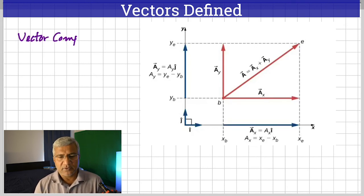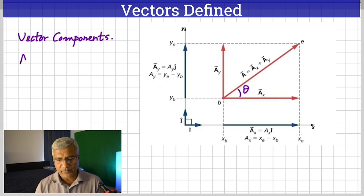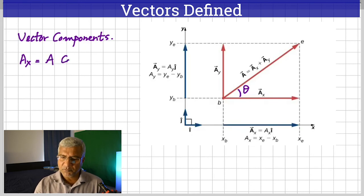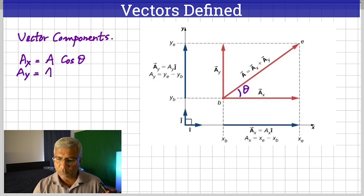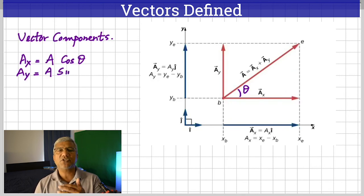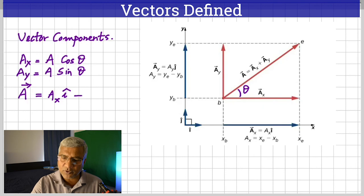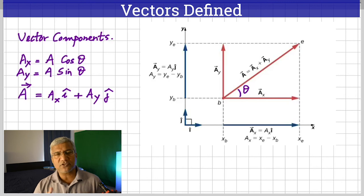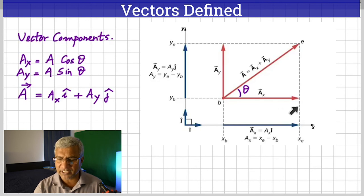This is called resolution of vectors, or finding the components of a vector. AX is the adjacent side, so AX equals A cosine theta. AY is the opposite side, so AY equals A sine theta — from the definition of sine and cosine. If you want to find the magnitude of the vector, you take the square root of AX squared plus AY squared.